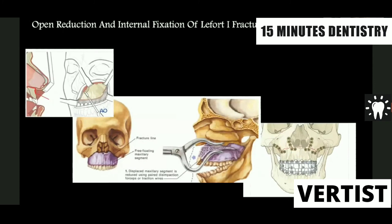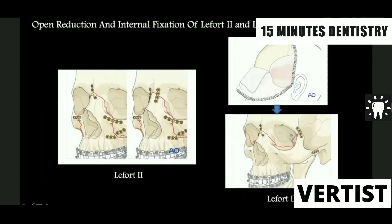For open reduction, the vestibular approach allows plating at different regions. You can use existing lacerations or a coronal approach — going through the scalp to expose the skull and plate different parts. The different plating sites include the frontozygomatic, zygomaticotemporal, nasofrontal, zygomatic buttress, zygomaticomaxillary regions, and the infraorbital rim. One must be judicious in choosing incisions.